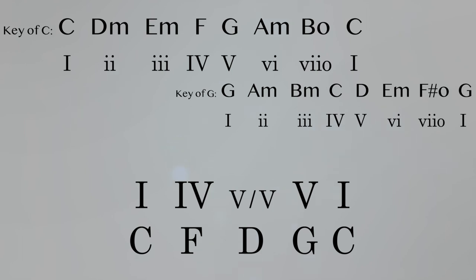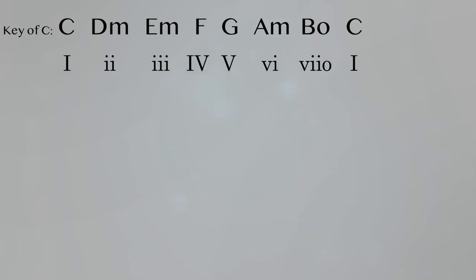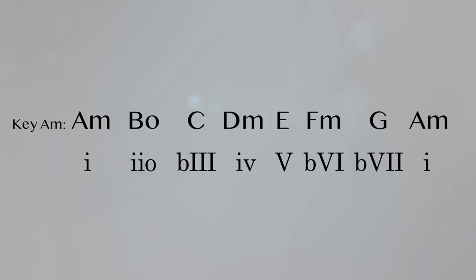Now we can take this a step further, and we should honestly, because you don't have to have just a five of five. You can have a five of two, a five of six, a five of whatever. So let's look at one of those. Let's look at a five of six. In this case, we're going to the six in the key of C, which is A minor, and we want to figure out what the five chord is in the key of A minor.